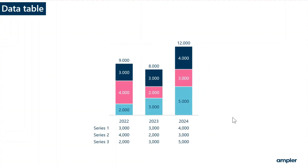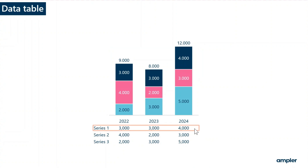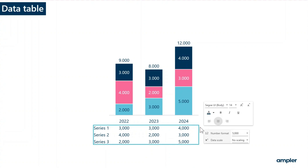By default, all series are shown in the data table. Hover above the table or a specific row to see the orange frame. Select the data table or a specific row to see the format menu.